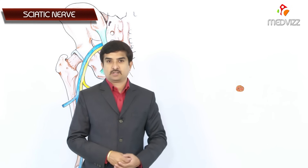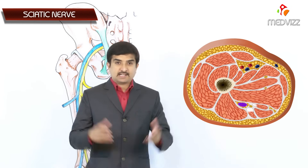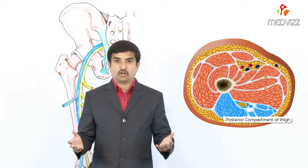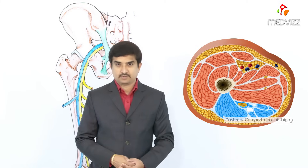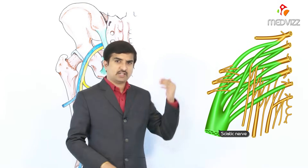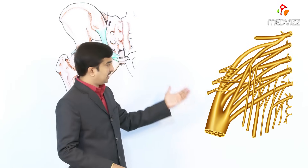In today's class we are going to discuss about another important nerve of the lower limb, which is the sciatic nerve. The sciatic nerve is the chief nerve of the posterior compartment of the thigh. It is the largest branch of the sacral plexus and it is the thickest nerve of the body.